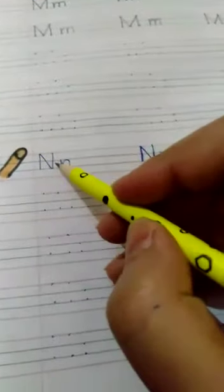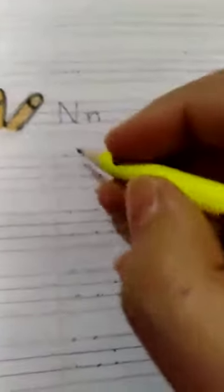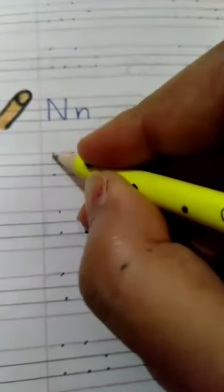Nail. N. Nest, house of birds. Nest. Let us see how we make N and n.